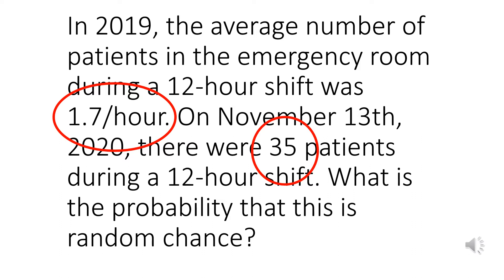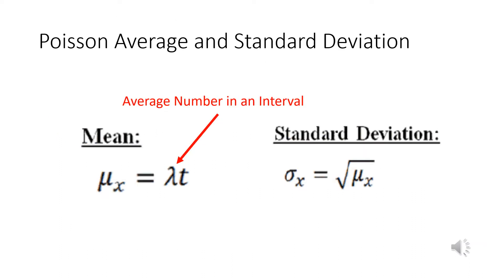Let's review what a mean and standard deviation is for a Poisson. So the mean is equal to the average number in that interval. In this case the interval is one hour, right? One hour, 1.7 per hour.